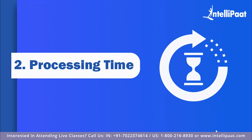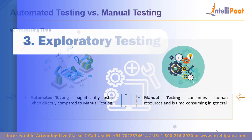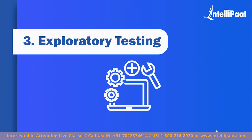Next is processing time. Automated testing is significantly faster because it uses computational power, which is exponentially faster than humans in statistical, mathematical, or other operations. Manual testing, on the other hand, consumes human resources and is time-consuming and resource-intensive. So for processing time, automated testing is preferred.